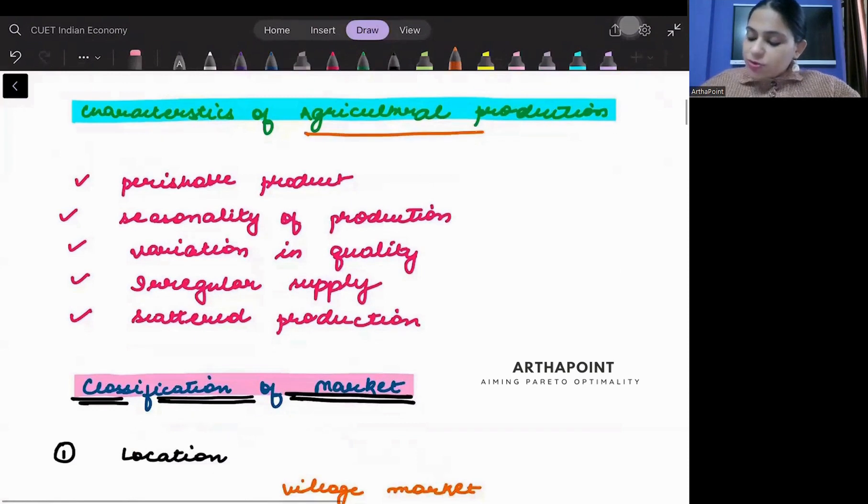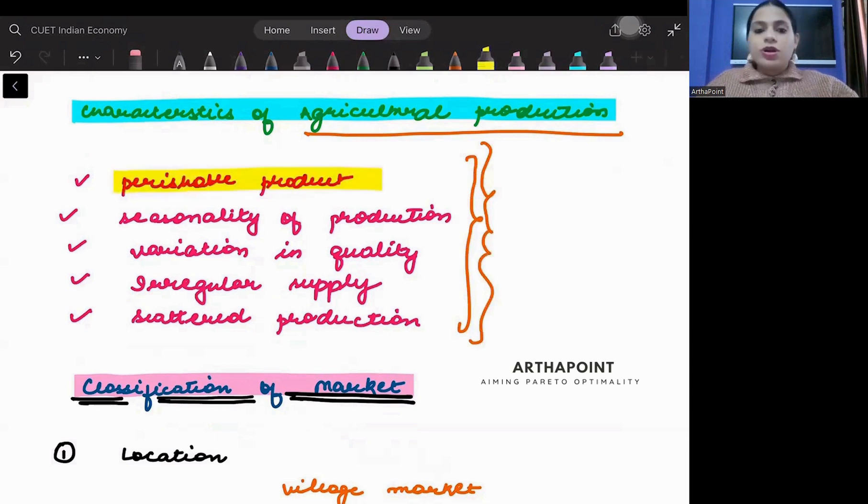Jab haan agriculture ki production ki baat karte hain, when we talk about agricultural production, these are some of the features of agricultural production. First is perishable product, meaning any product which can easily be spoiled, jho easily kharab ho jata hai, that's called a perishable product.